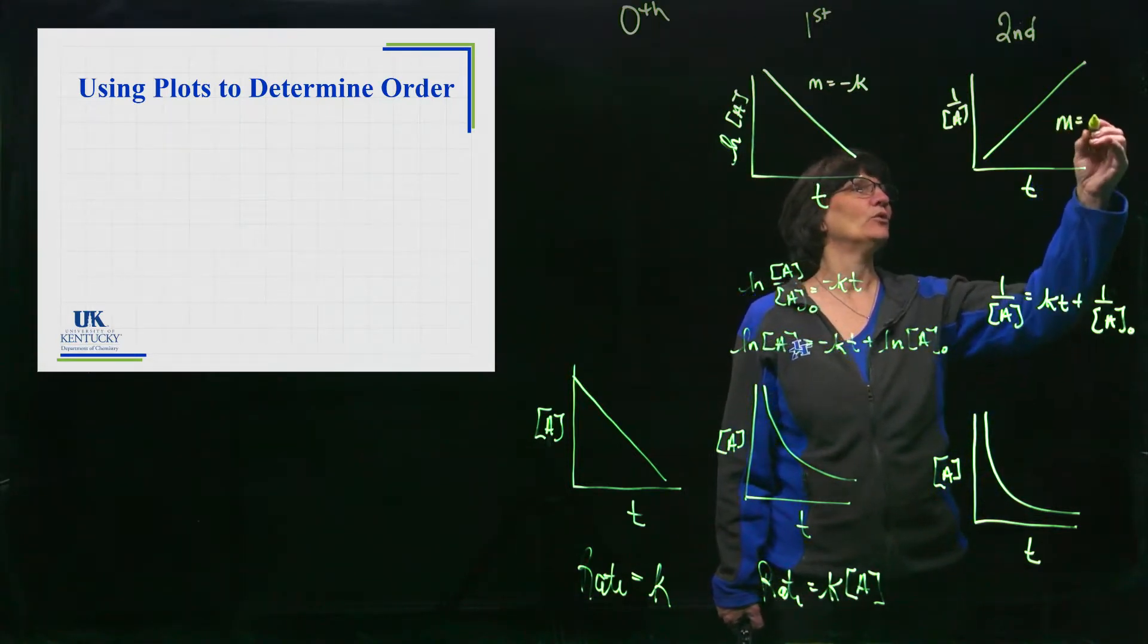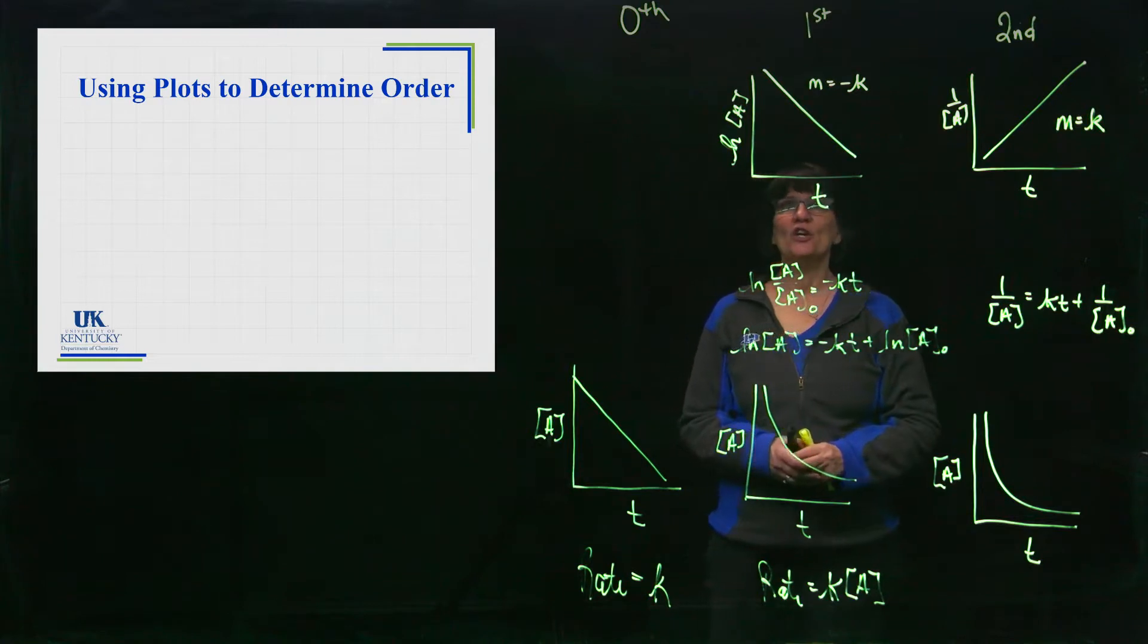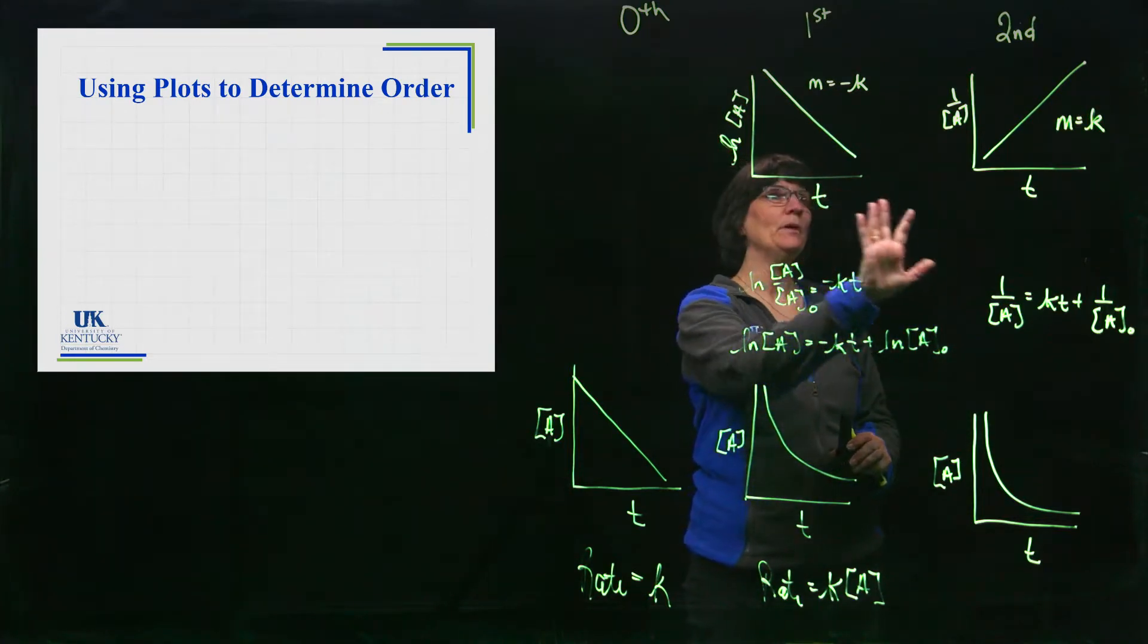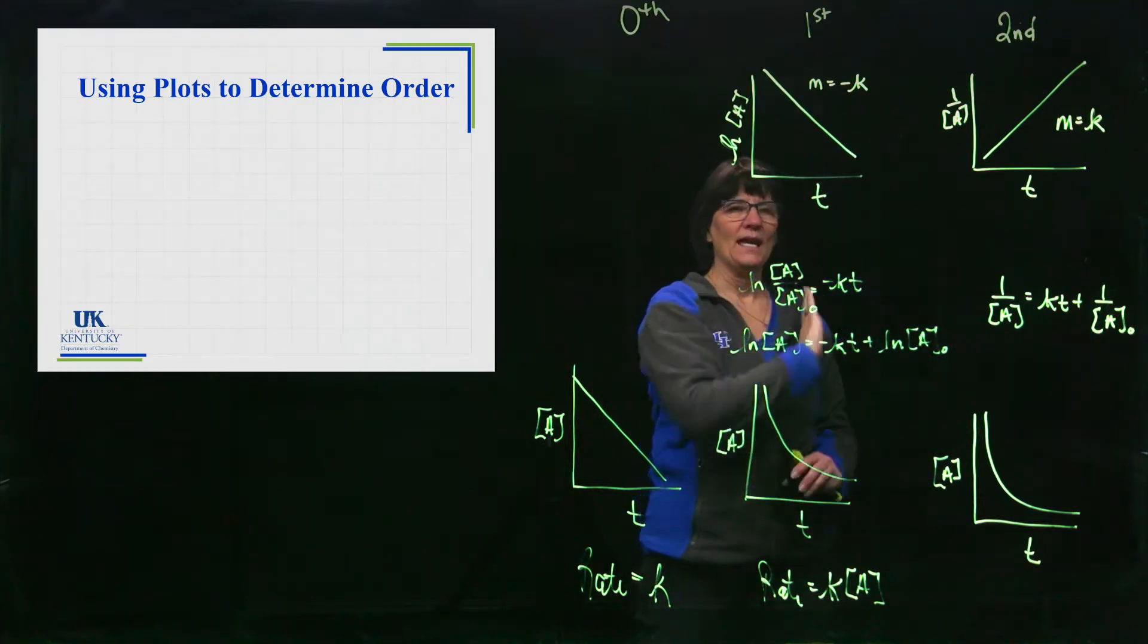So in the integrated rate laws we're comparing concentration in time, but we are having those concentrations in different forms in order to get a nice straight line.